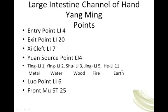He-sea is Large Intestine 11. The He-sea points are basically all around the elbows and knees. As the joints bend, that creates an opportunity for pooling of qi and blood, and the He-sea points are replete with qi and blood — those are gathering places.